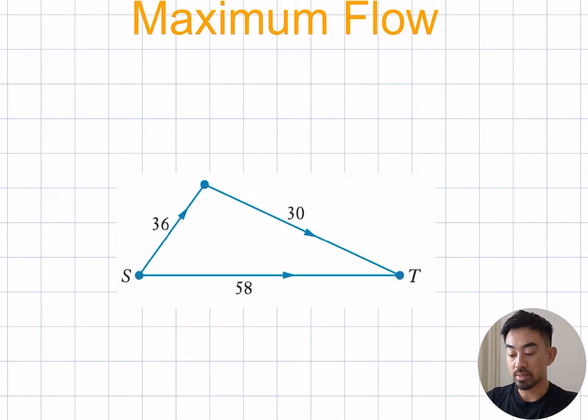Now what we need to do is basically look at all the ways you can go from s to t. For example I can go from s to t like this, 36, 30, or I can just go straight across like that. The idea is you want to choose a path that goes from s to t or source to sink and choose the smallest number on that route. So in this case it's 30.